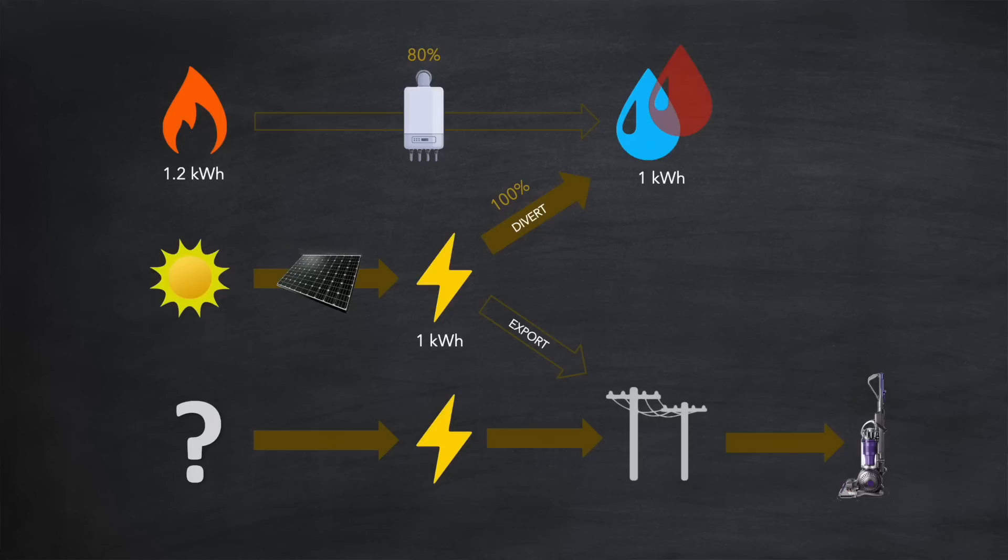We can now consider the energy requirement of your neighbour then. Let's say their vacuum cleaner has a power rating of 1 kilowatt and runs for an hour. Their requirement is 1 kilowatt hour of energy. But because you're diverting that solar instead of exporting it, your neighbour will instead need to get that 1 kilowatt hour from another generation source.